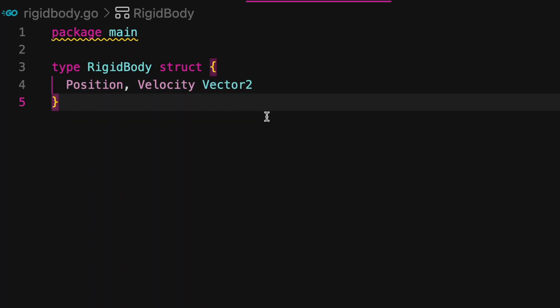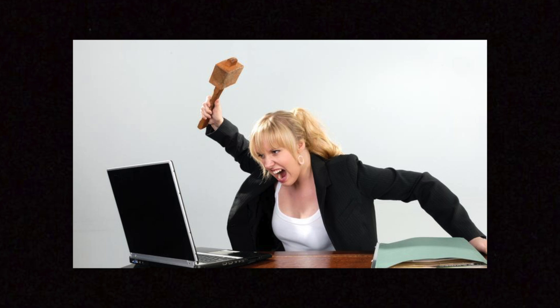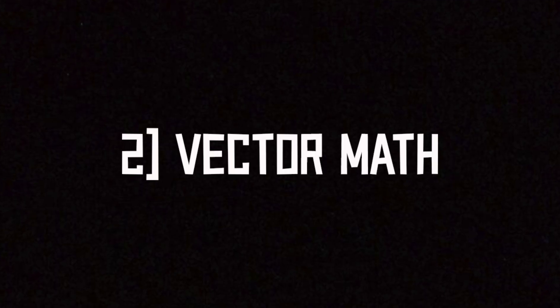So jumping into the project, I think before we even start coding rigid bodies and the engine itself, we'll need two things. First, we need a way to see our rigid bodies, and I don't really feel like writing my own game engine, so I'll just use a random one that I find online. Second, we need a way to do the vector math.